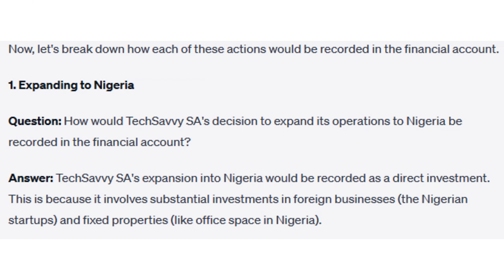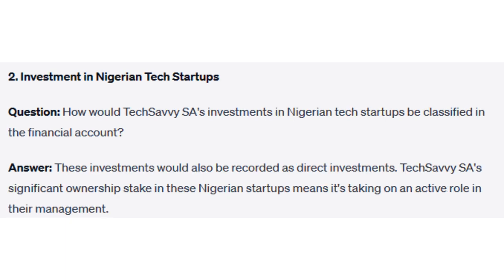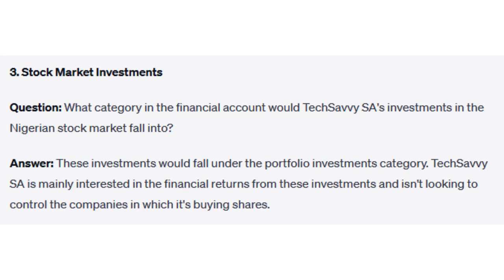Now let's break down how each of these actions would be recorded in the financial account. Question 1 — Expanding to Nigeria: How would TechSavvySA's decision to expand its operations to Nigeria be recorded? Answer: TechSavvySA's expansion into Nigeria would be recorded as a direct investment, because it involves substantial investments in foreign businesses — the Nigerian startups — and fixed properties like office space in Nigeria. Question 2 — Investment in Nigerian tech startups: How would TechSavvySA's investments in Nigerian tech startups be classified? Answer: These investments would also be recorded as direct investments. TechSavvySA's significant ownership stake in these Nigerian startups means it's taking on an active role in their management. Question 3 — Stock market investments: What category would TechSavvySA's investments in the Nigerian stock market fall into? Answer: These investments would fall under the portfolio investments category, as TechSavvySA is mainly interested in the financial returns and isn't looking to control the companies in which it's buying shares.